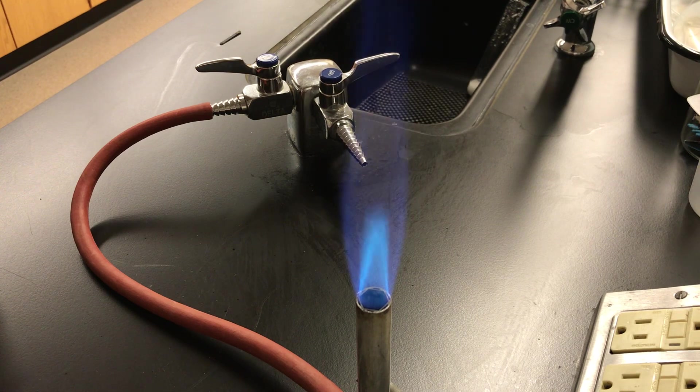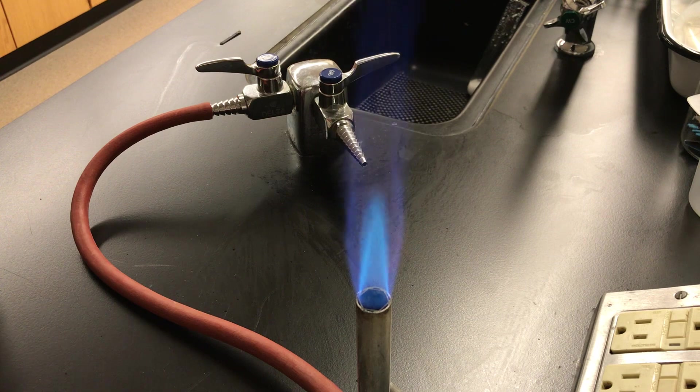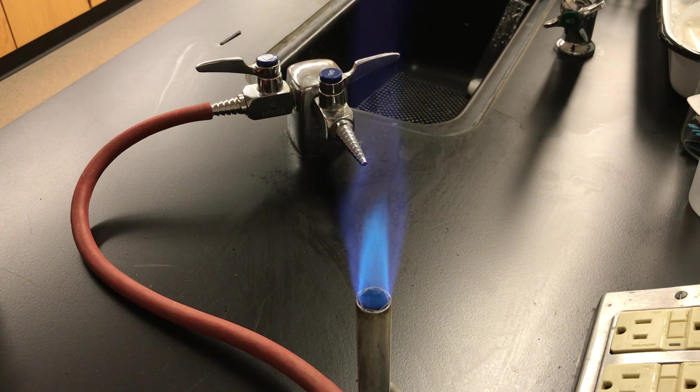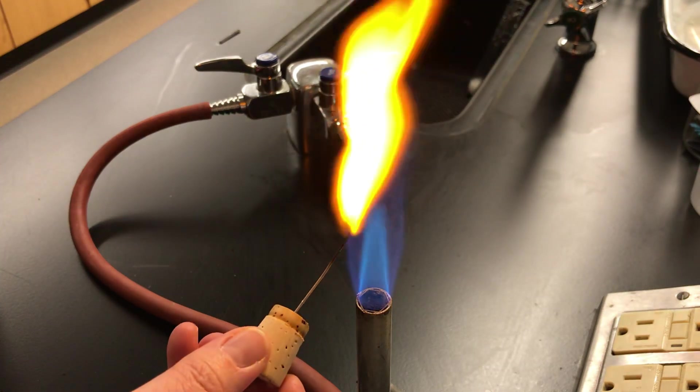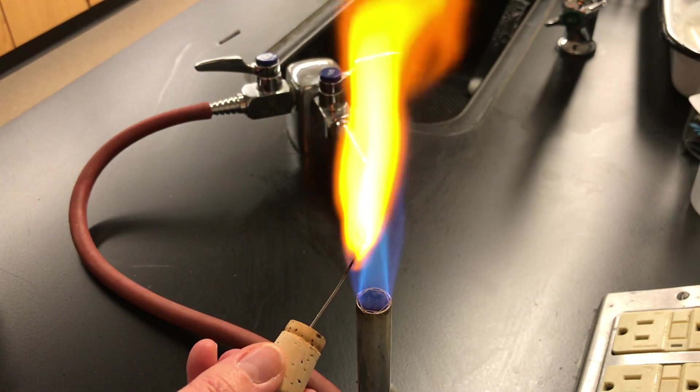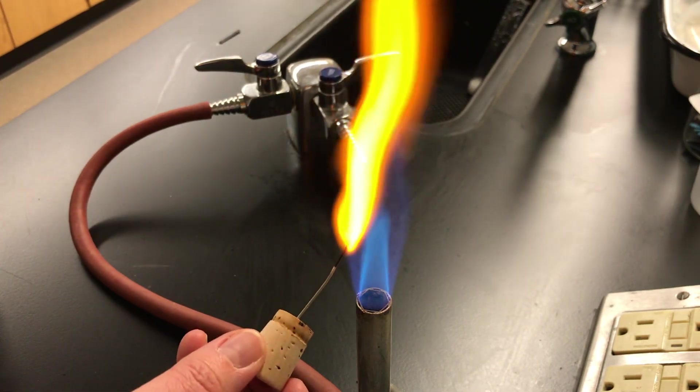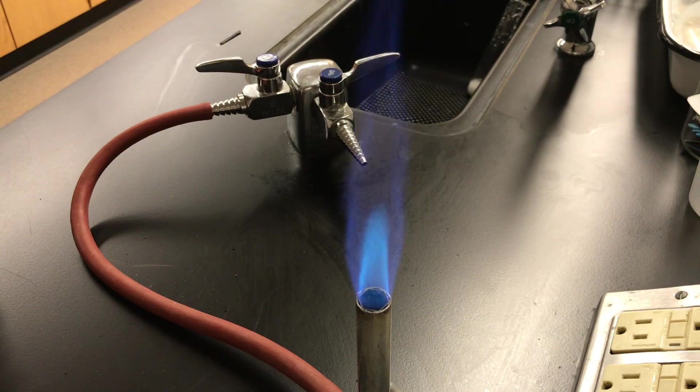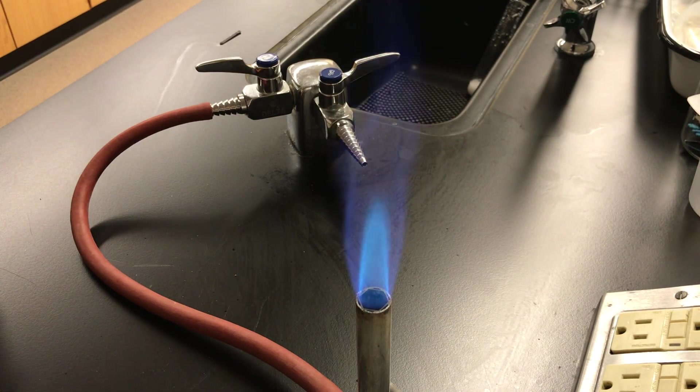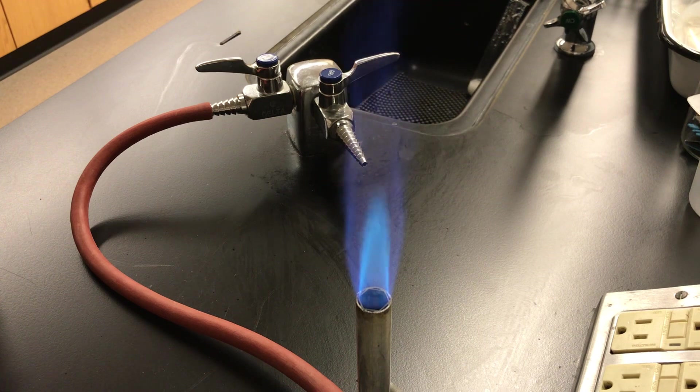The next salt that we're going to look at is sodium nitrate. Again, it's the sodium metal that's going to be producing the characteristic color this time. When I look at that, it might be a little bit hard to see from the video. It's sort of an orangey color. It's usually described as a bright yellow orange or a very bright yellow.